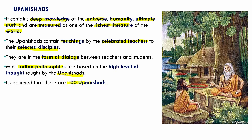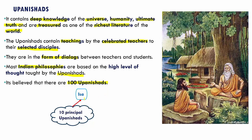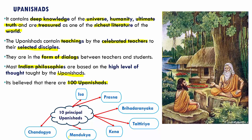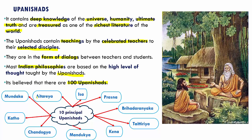There are believed to be more than a hundred Upanishads, but we have ten principal Upanishads: Isha, Prashna, Brihadaranyaka, Taittiriya, Kena, Mandukya, Chandogya, Katha, Mundaka, and Aitareya.